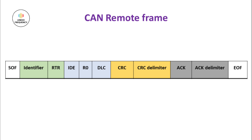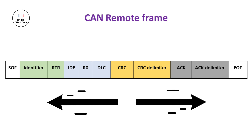A remote frame is the same as a DataFrame, without the data field and with the RTR bit value recessive. The use of remote frames allows for efficient data transmission and reduces the bus load in the CAN network. Nodes can request data on demand, and only the required data frames are transmitted in response to the remote frame, thus minimizing unnecessary communication and optimizing network performance.